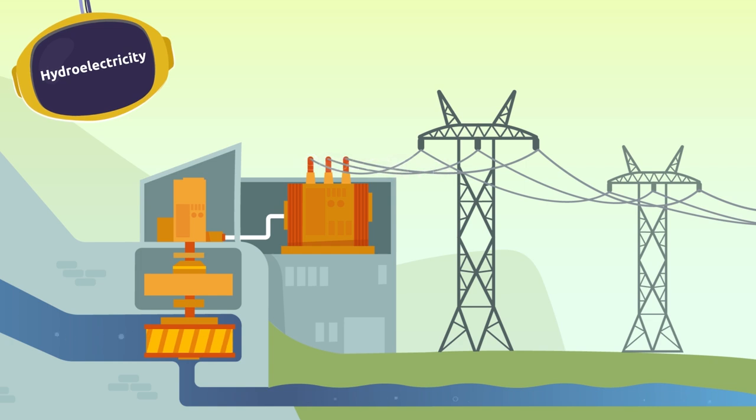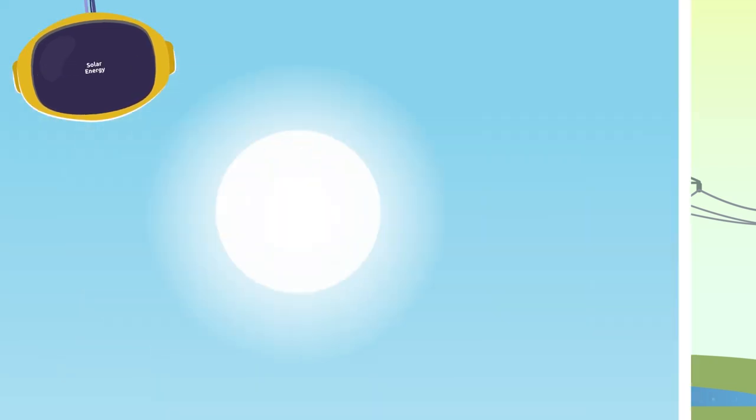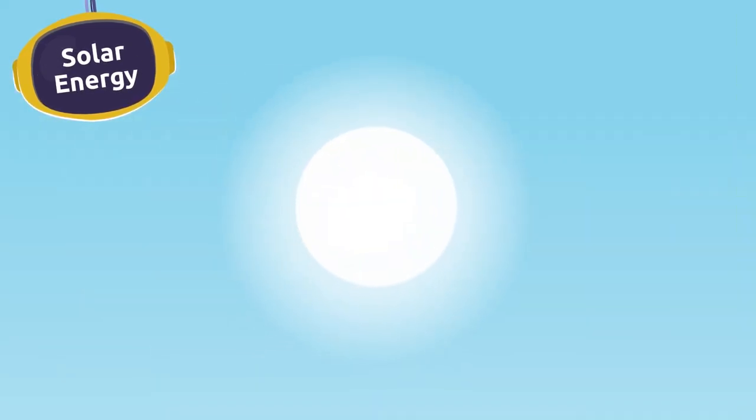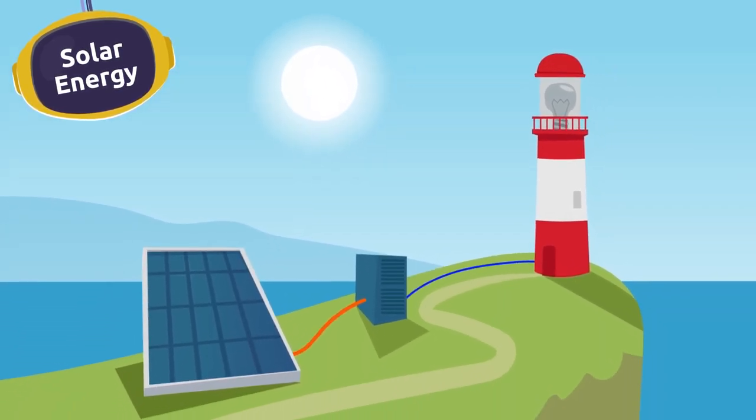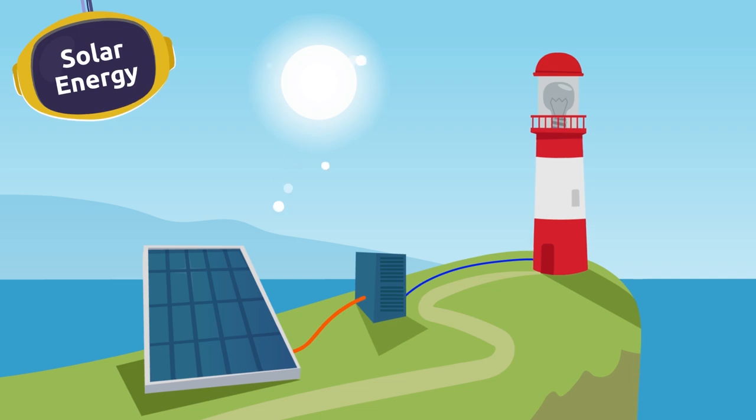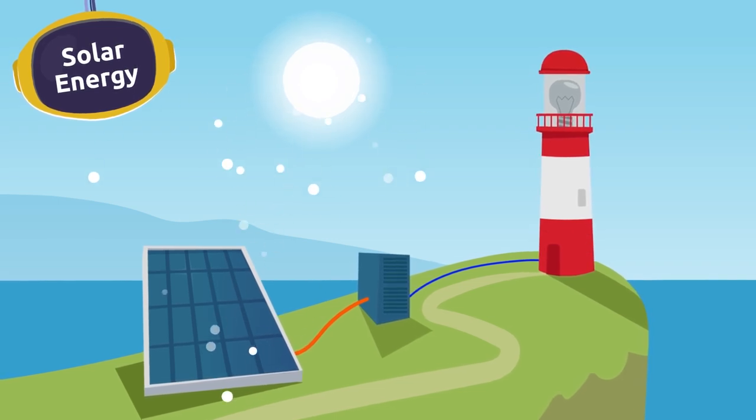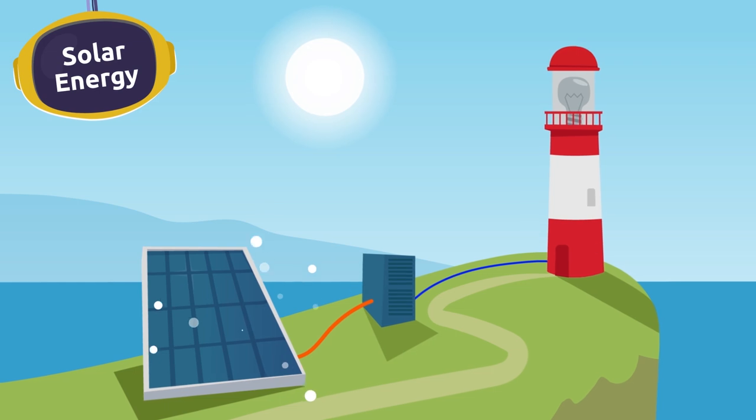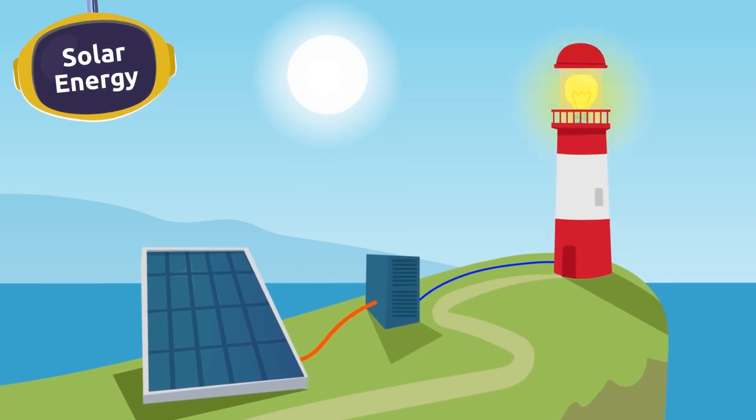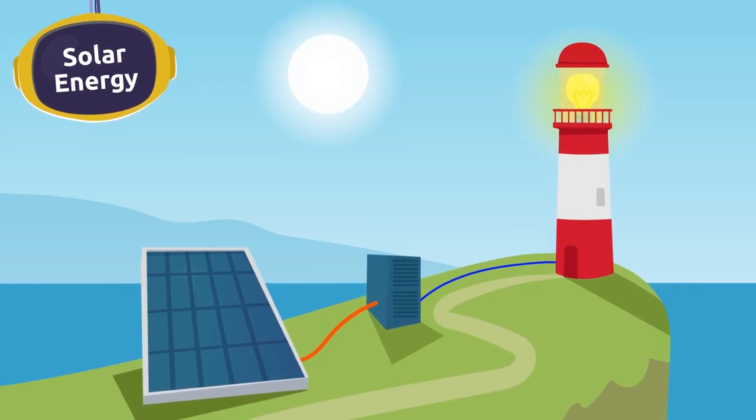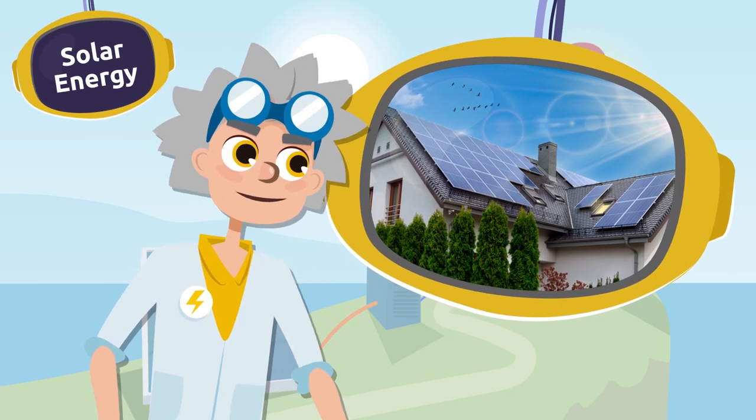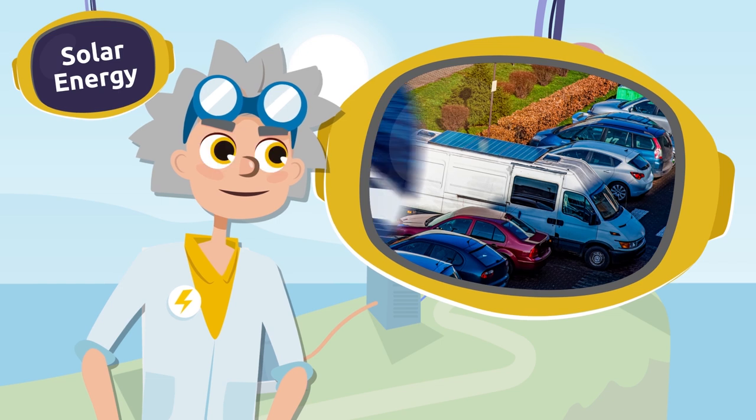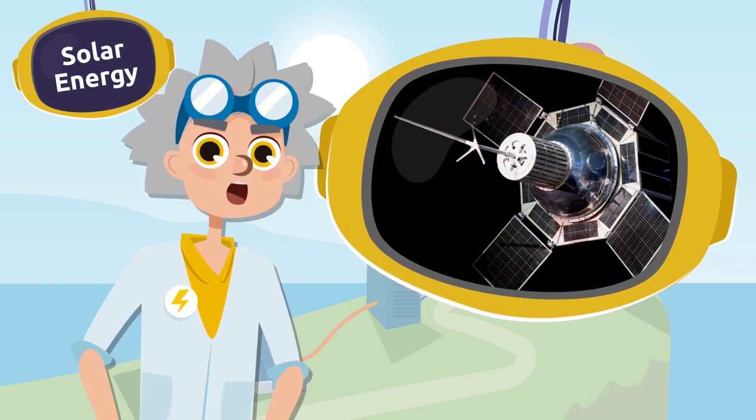Lastly we will talk about the energy we can use from the sun. This is called solar energy. When it's a sunny day, the solar panels capture the solar energy from the sun and transform it into electricity. Solar panels can be found on buildings, cars, boats, and space satellites.